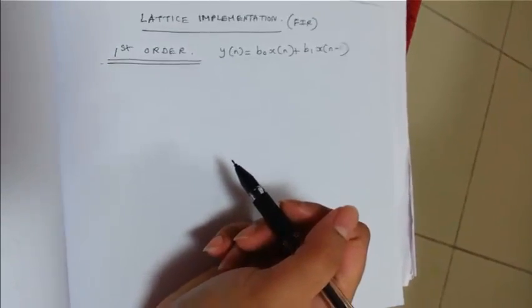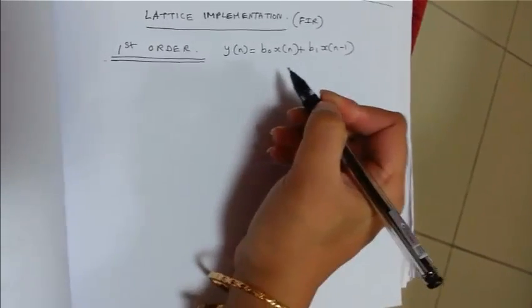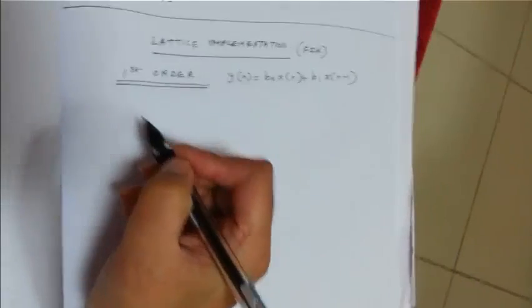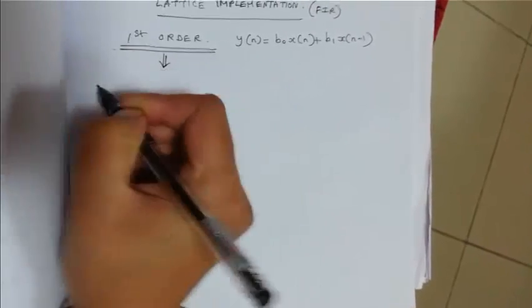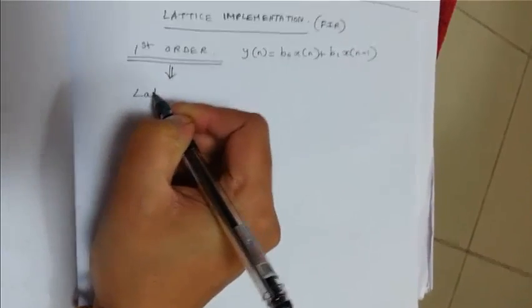So let us start with the first order FAR filter. The direct form expression is Y of N is nothing but B0 X of N plus B1 X of N minus 1.